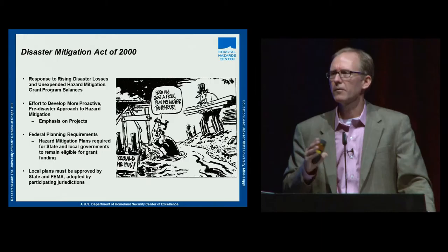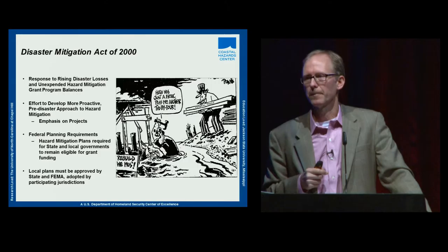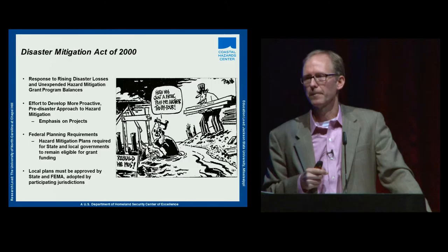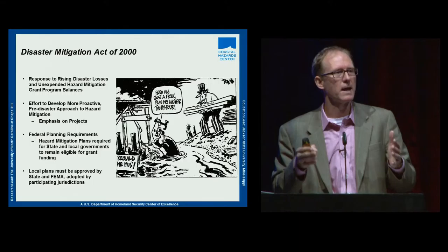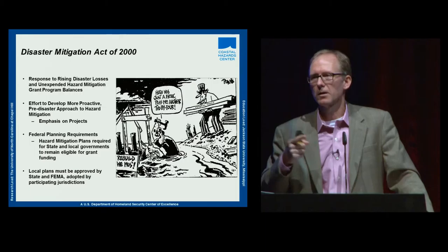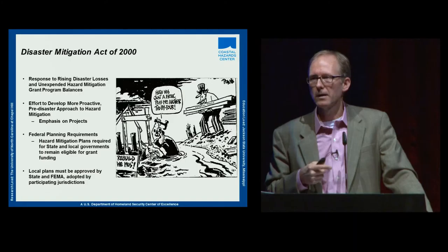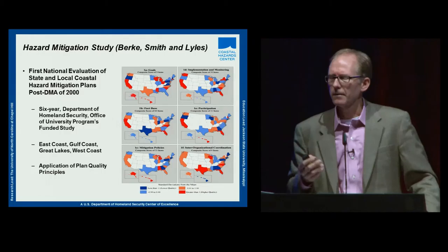The Disaster Mitigation Act's genesis was really about expending unexpended post-disaster hazard mitigation funding — that was the political driving force. It also required the development of pre-disaster hazard mitigation plans. Given that impetus, it's not surprising that many plans developed as a result are focused on identification of projects rather than forward-looking documents. Many plans we reviewed were retrospective — what can we do to buy out properties at risk — rather than asking what we can do to limit development in future flood hazard areas.